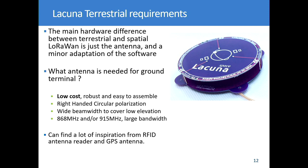If you want to communicate with space, especially with the Lacuna solution, you use exactly the same frequencies and the same hardware for the chip, MCU, and so on. The only differences are a small software change and the antenna. For a ground terminal, we focus on a low-cost, robust, easy-to-assemble antenna. It must be right-handed, because Lacuna selects a specific sense of rotation. It must also have a wide beam width to communicate at low elevation, and ideally cover both 868 and 915 MHz.